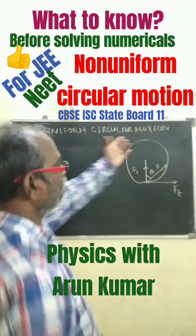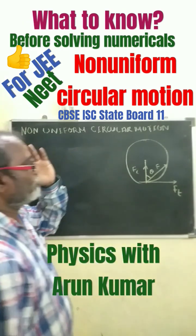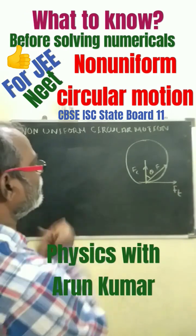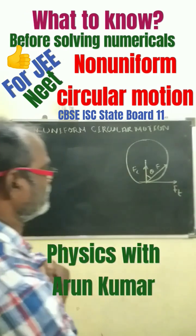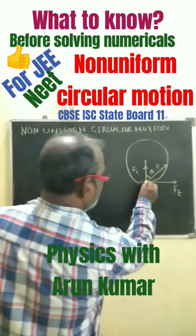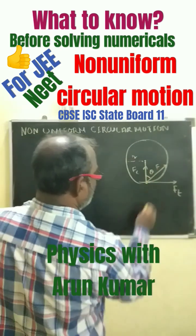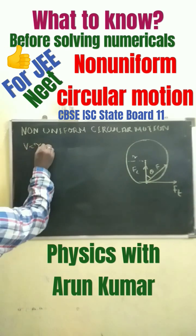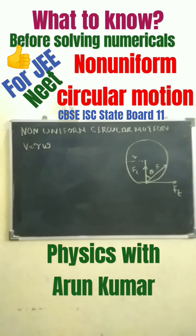In non-uniform circular motion, you must know that velocity is not equal to constant, and neither is angular velocity constant. If v is the velocity at any point and r is the radius, then v equals r·omega, where omega is the angular velocity.